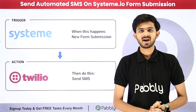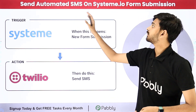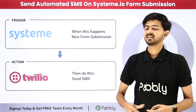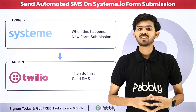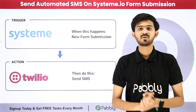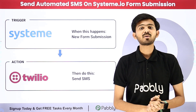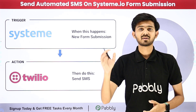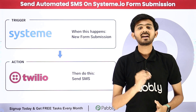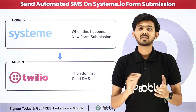Hello everyone, welcome back to Pabbly. Today our topic is how to send automated SMS on Systema.io form submission. Whenever I receive a new form submission from Systema.io and get a new contact subscribed, I'll automatically capture the details of that form submission and use them to send an automated SMS via Twilio to my subscriber.